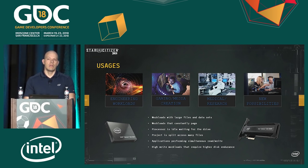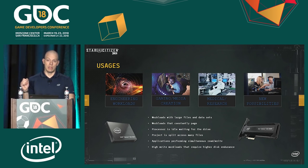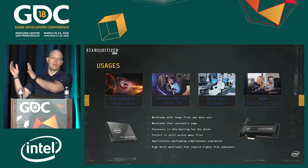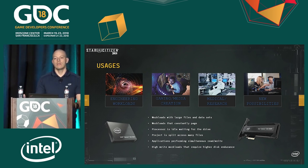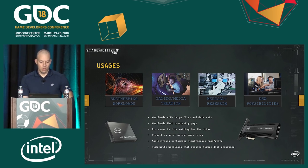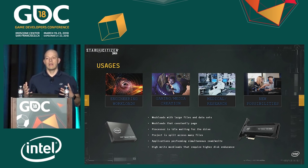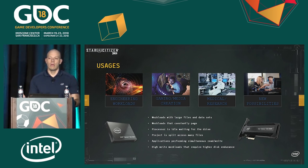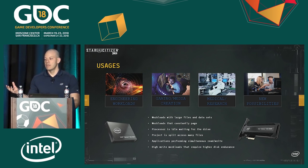For example, someone mentioned a 16K high-PPI image that had to be chopped into several stages to process. With this drive, you can actually load that whole picture and work with it. Those are the kinds of usages we see, and also new possibilities — because this is a brand new technology. We're working with Cloud Imperium Games because they have know-how on game development and we have know-how on the hardware, so together we can come up with newer ideas we haven't thought about.